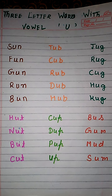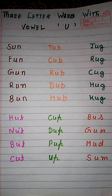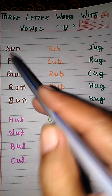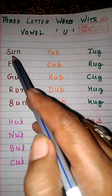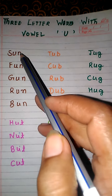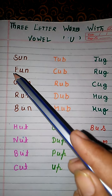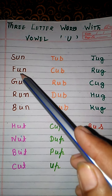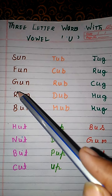Let's see some three-letter words with the vowel U. S, U, N. Sun. F, U, N. Fun.